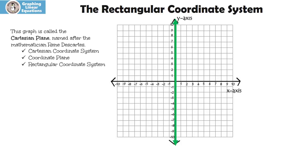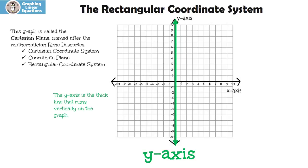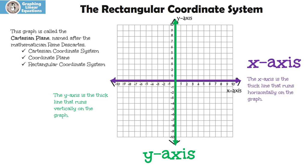This one is called the y-axis. The y-axis is the thick line that runs vertically on the graph. And then we have this one — the x-axis. The x-axis is the thick line that runs horizontally on the graph.